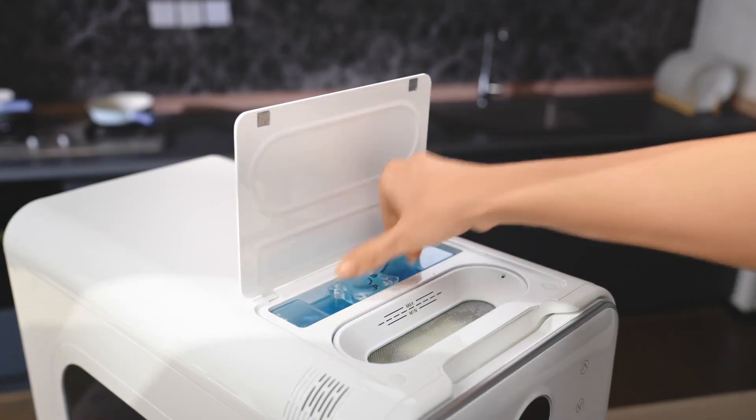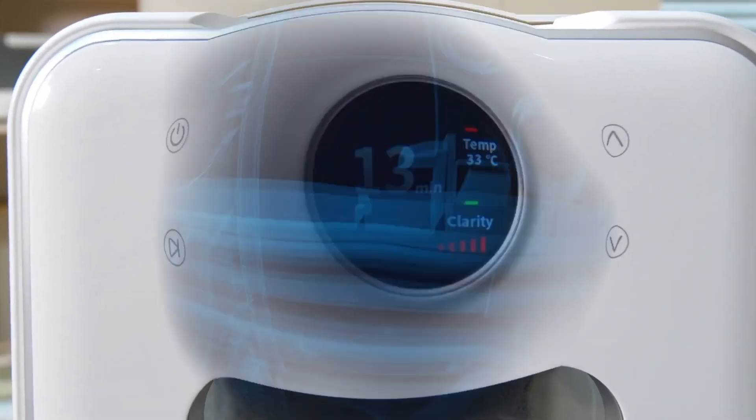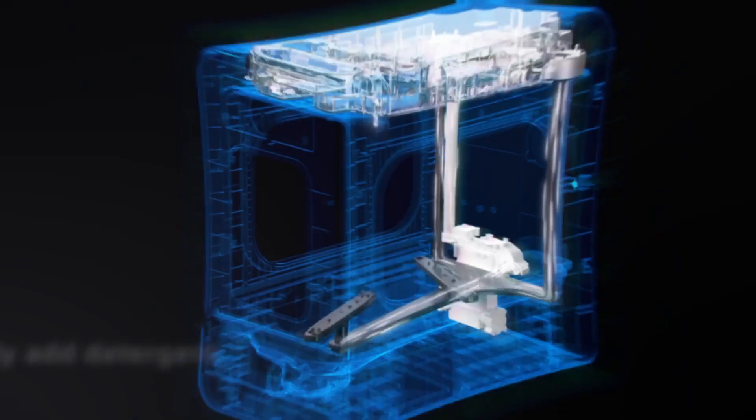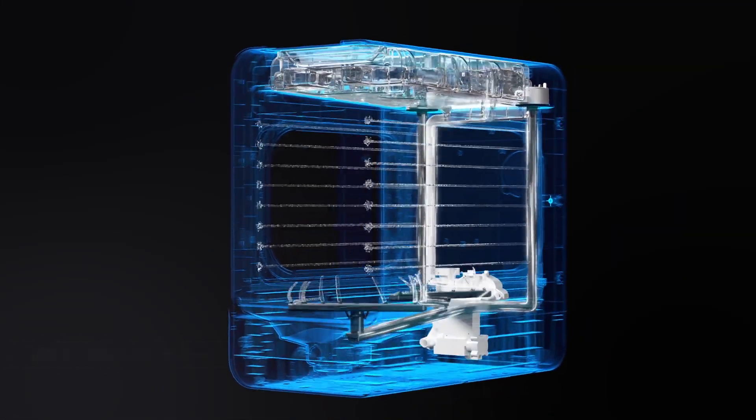Put it in, add detergent, fill in water, select mode, and start. With AI sensors, R1 can automatically add detergent.